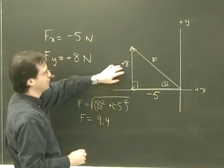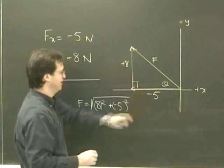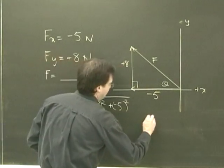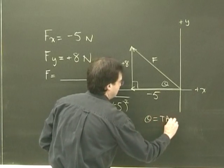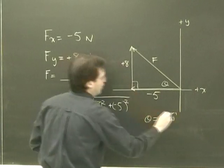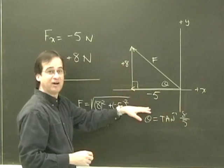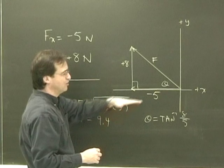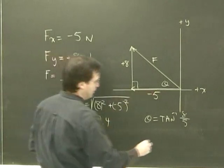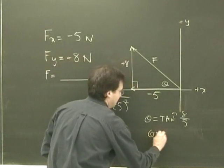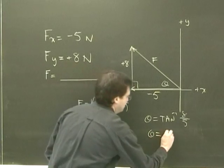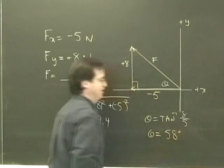So I'm going to use the inverse tan because I have the opposite and the adjacent. So the angle is going to be the inverse tan of opposite 8 divided by 5. I don't have to worry about the negative. I'm just using this as a right-angled triangle. This side is 8 units long. This one is 5 units long. So I get the angle, and the angle is equal to 58 degrees.